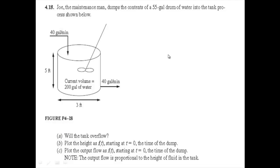Today, we're going to solve a sample problem with an application of Simulink. The problem reads as: Joe, the maintenance man, dumps the contents of a 55-gallon drum of water into the tank process shown below. You can see the cylindrical tank. The entering influent has a volumetric flow equal to 40 gallons per minute, and the discharge rate is also equal to 40 gallons per minute. The current volume accumulation in the cylindrical tank is equal to 200 gallons of water.